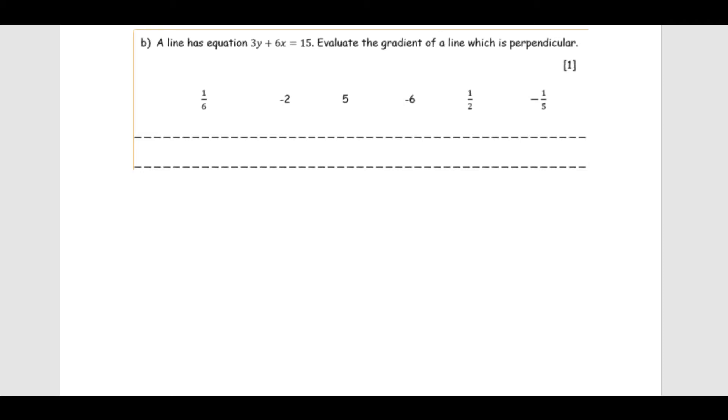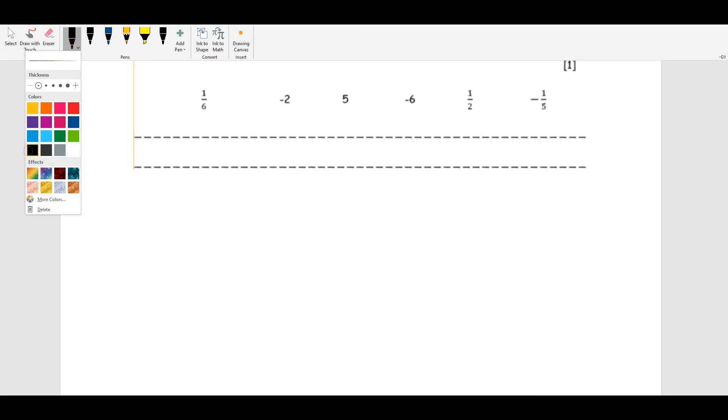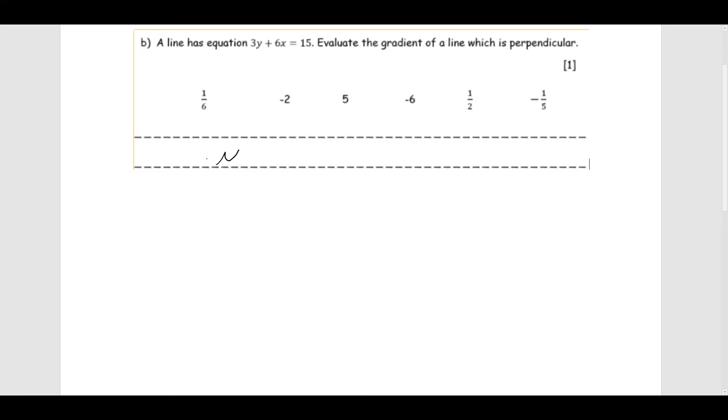A line has equation 3y plus 6x equals 15. Evaluate the gradient of a line which is perpendicular. As with any straight lines question, we need to remember that the equation of a line has the form y equals mx plus c, where m is the gradient or the slope of the line, and c is the y-intercept of the line.